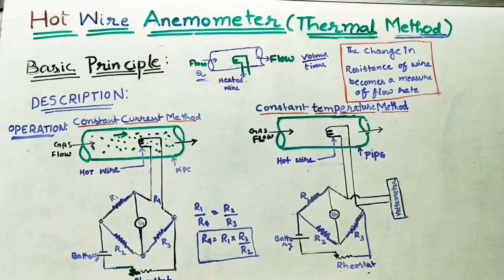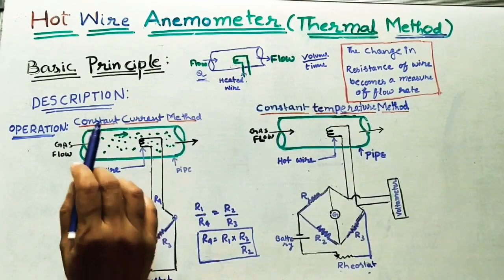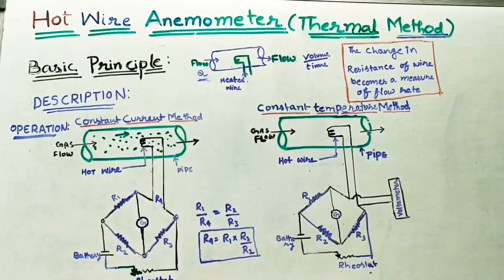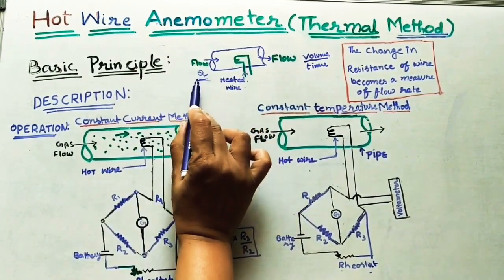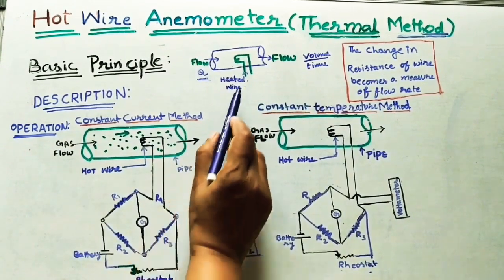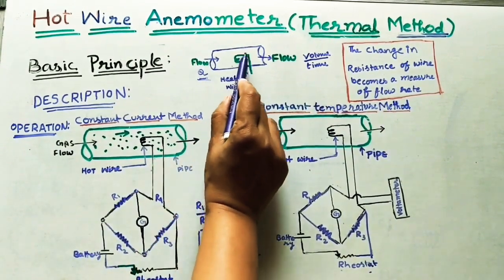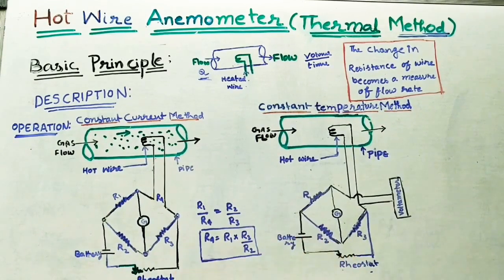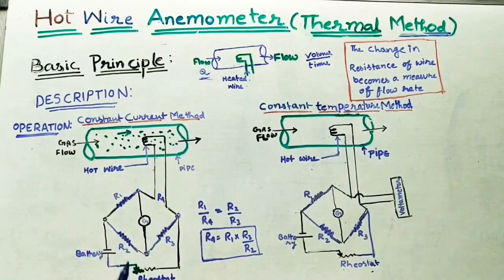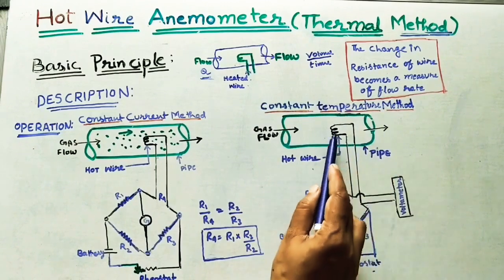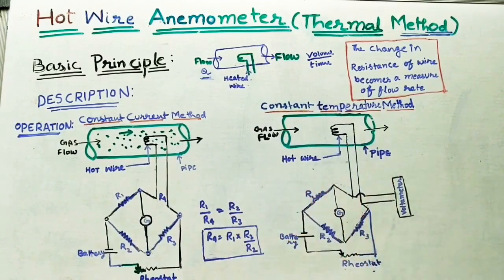Now, in our method we have to find how much change in resistance occurs, which will indicate the Q value in calibrated form. We are using two different forms: the first one is the constant current method, where we supply constant current; and the next is the constant temperature method, where we keep the filament at constant temperature.